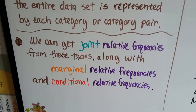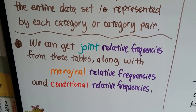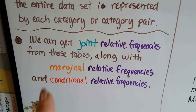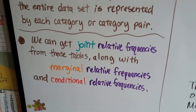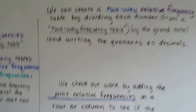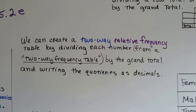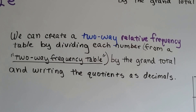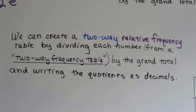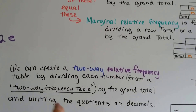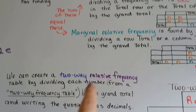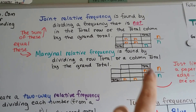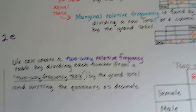We can get joint relative frequencies and marginal relative frequencies from these tables. In the coming video, we're going to talk about conditional relative frequencies. We can create a two-way relative frequency table by dividing each number from a two-way frequency table by the grand total and writing the quotients as decimals.